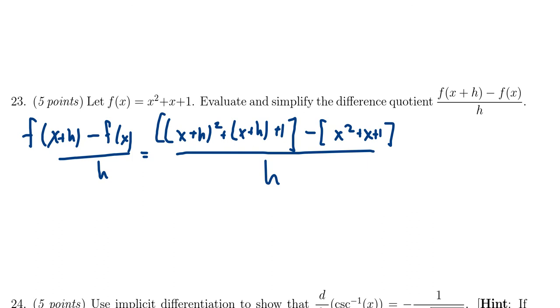So now we need to FOIL expand some things before we can combine some like terms. In particular, this x plus h squared, we need to FOIL that thing out. Upon doing so, we end up with x squared plus 2xh plus h squared. Then we'll just drop the parentheses everywhere else: x plus h plus 1, they're not necessary.